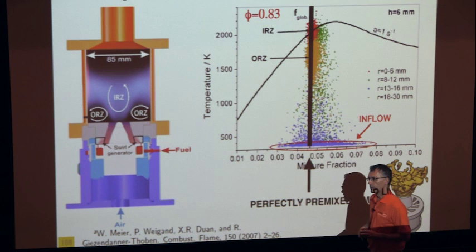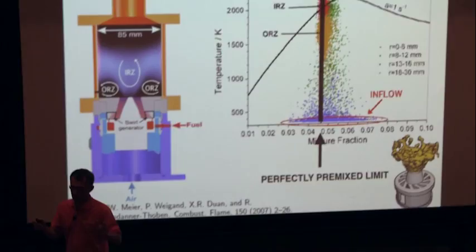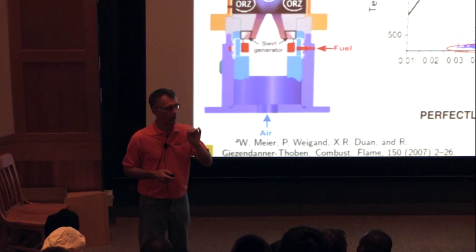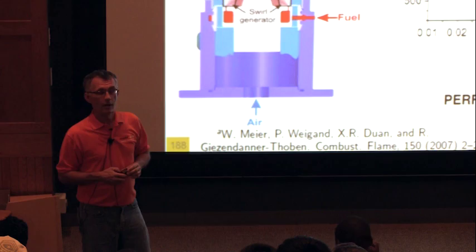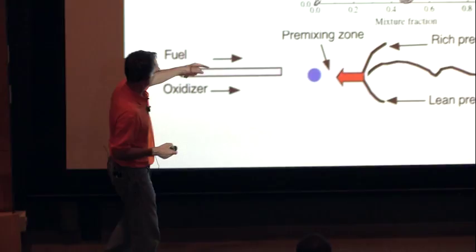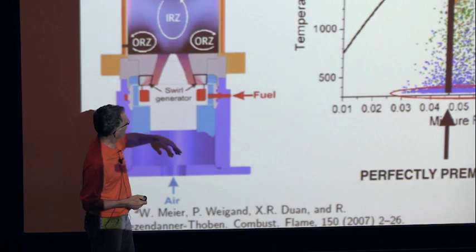Triple flames and partially premixed flames are different animals that don't live in the same world. You will find triple flames in diffusion flames. Partially premixed flames usually do not exhibit triple flames because they are premixed — if premixed, you burn like a premixed flame. The main difference is that in triple flames there is very limited time to mix — pure fuel and pure air — whereas in Precinsta you have a long tube where things are supposed to mix before they arrive.